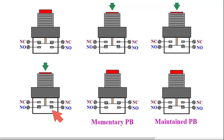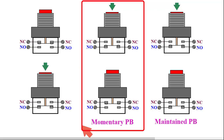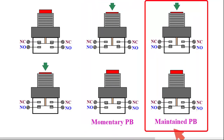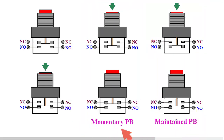This is the normal operation of a push button. There are mainly two types of push buttons: one is a momentary push button and another one is a maintained push button. Now I am explaining how momentary and maintained push buttons work.